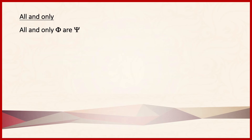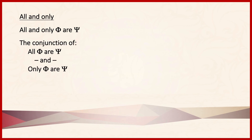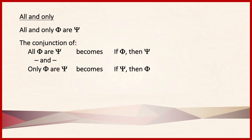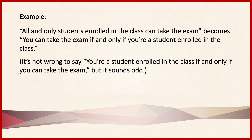What about 'all and only'? 'All and only phi are psi' sounds a lot like 'if and only if.' It's actually the conjunction of two things: 'all phi are psi' and 'only phi are psi.' 'All phi are psi' becomes 'if phi, then psi,' and 'only phi are psi' becomes 'if psi, then phi.' Conjoining them gives us 'phi if and only if psi.' For example, 'all and only students enrolled in the class can take the exam' is the same as 'you can take the exam if and only if you're a student enrolled in the class.'